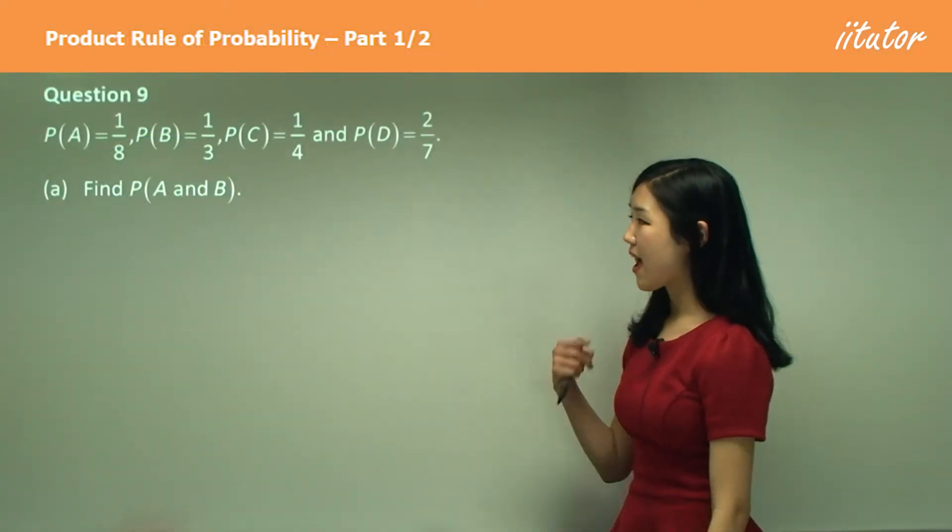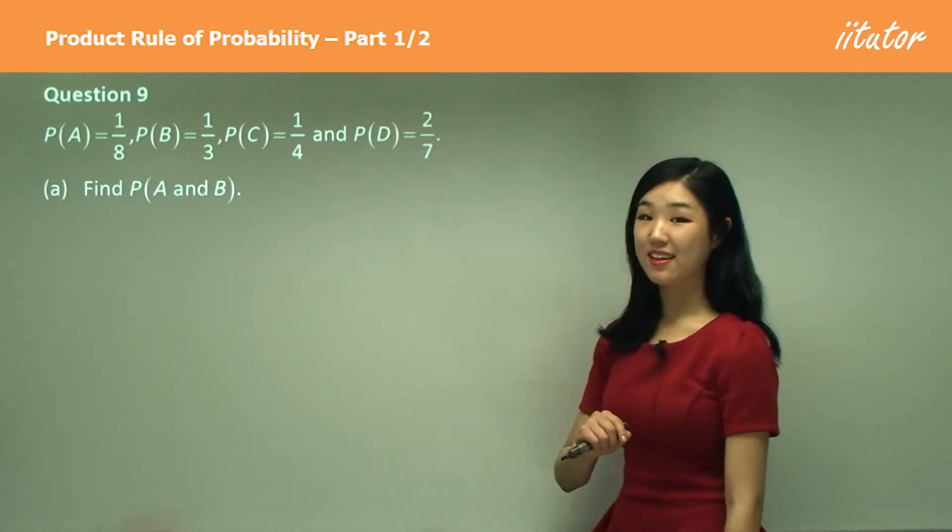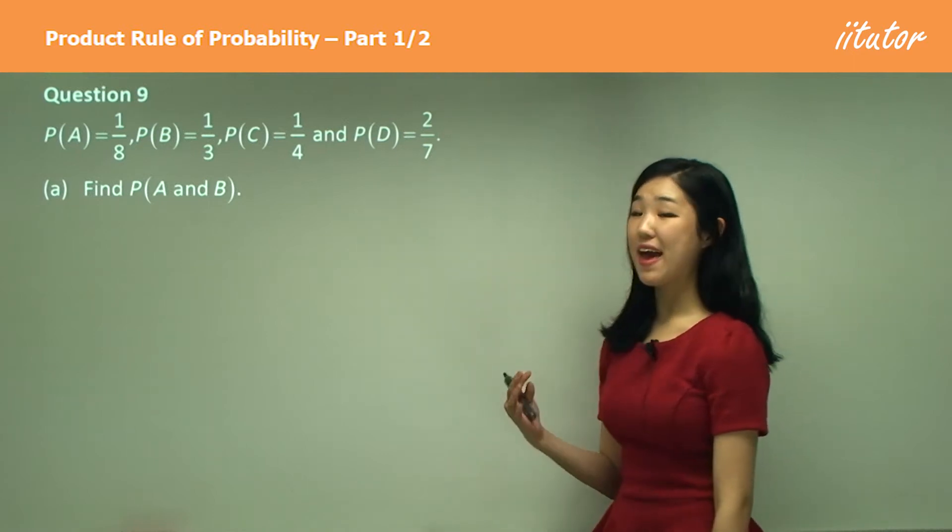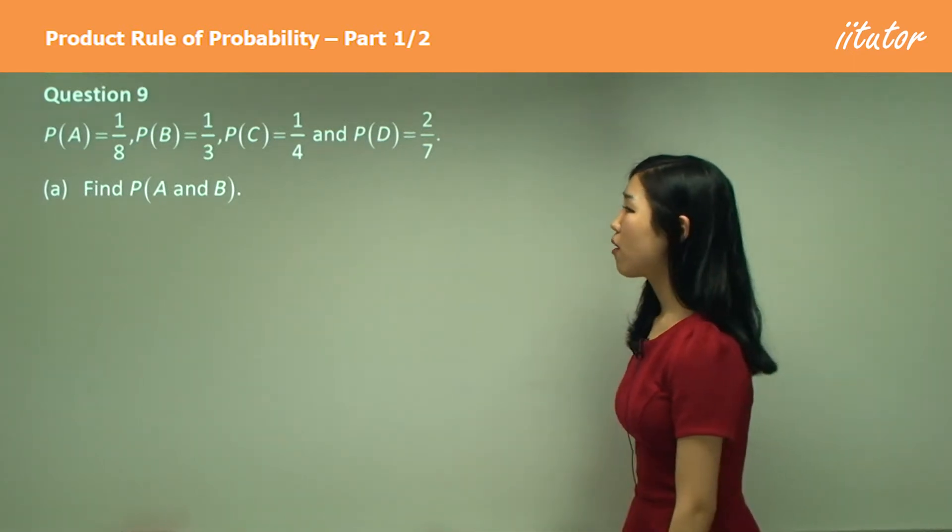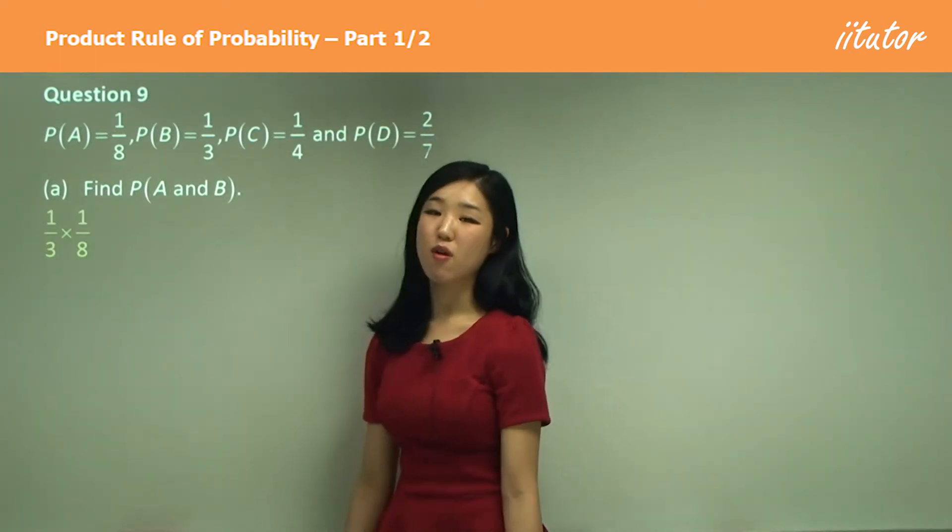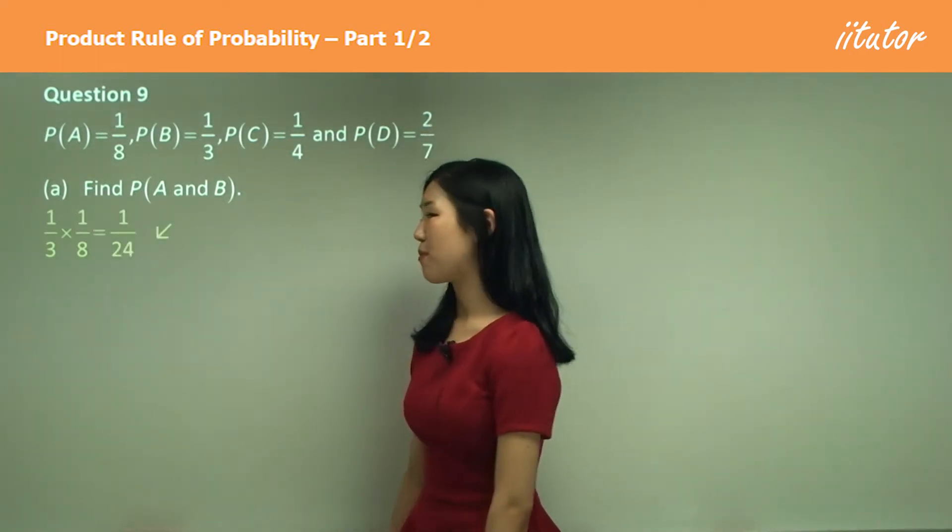And they give you probability of A, B, C and D in the question. Part A, they want us to find probability of A and B. Well probability of A and B is simply probability of A times the probability of B which becomes one on 24.